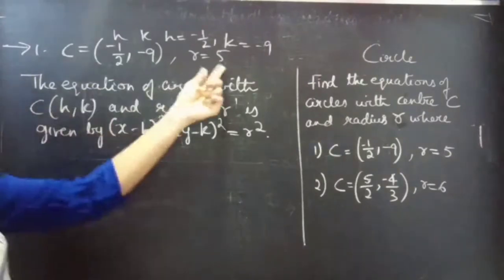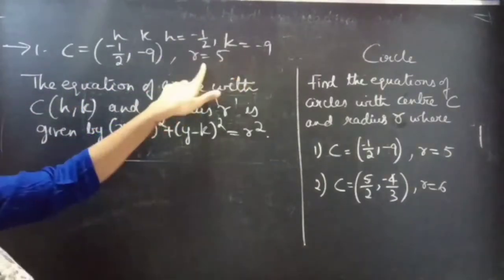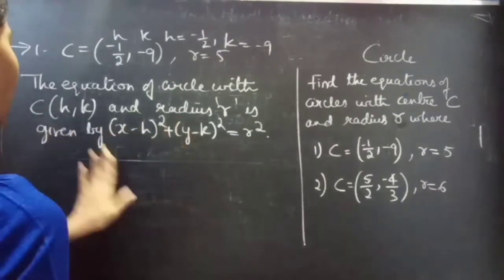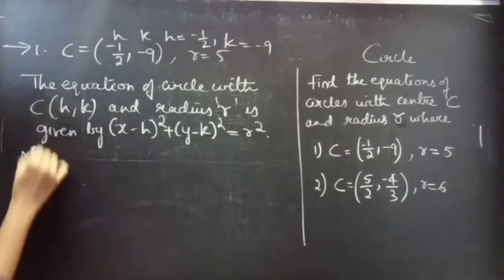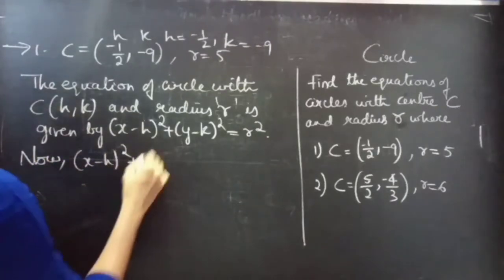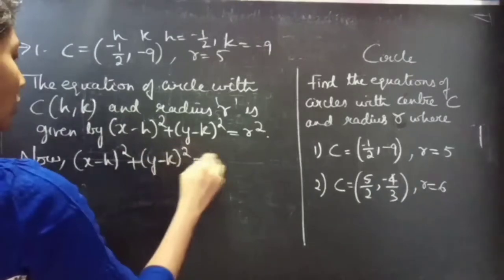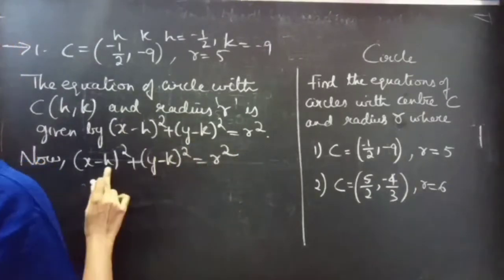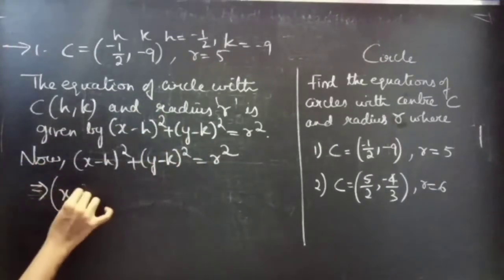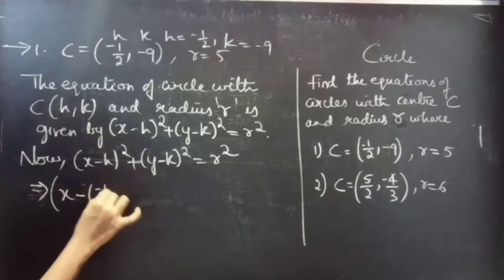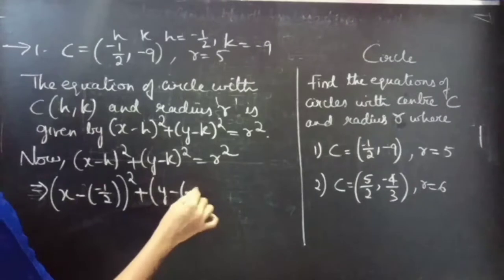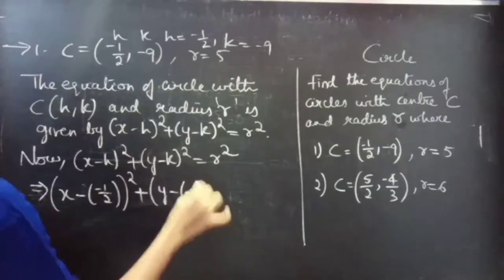And we also have R = 5. Using these values we can find the circle equation using this formula. Now consider the equation (x - H)² + (y - K)² = R². We are going to substitute the values of H, K and R. Then: x minus (-1/2) whole square plus y minus (-9) whole square.